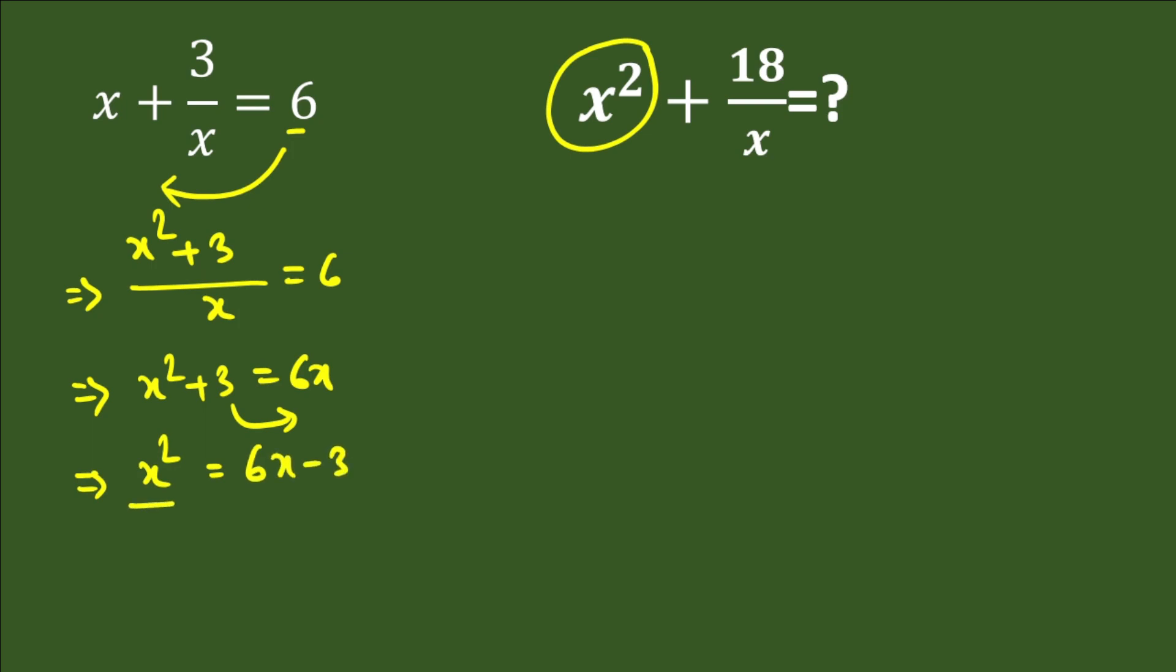So we have calculated the value of x squared: it is 6x minus 3. Our expression will be: we'll write in place of x squared it is 6x minus 3, so it is 6x minus 3 plus 18 over x.